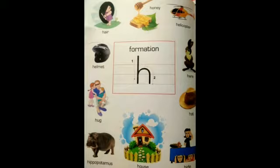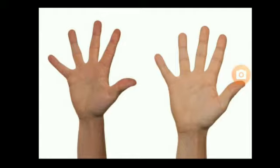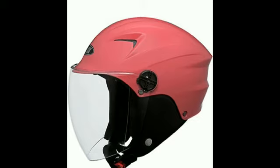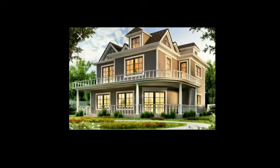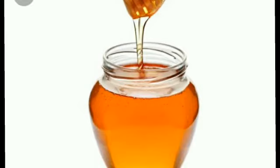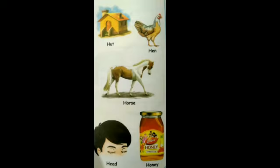This is H, not H. Children, see. I found my hands, my hair, my helmet, my house and honey. You all take a break and see what you see around you starting with H.